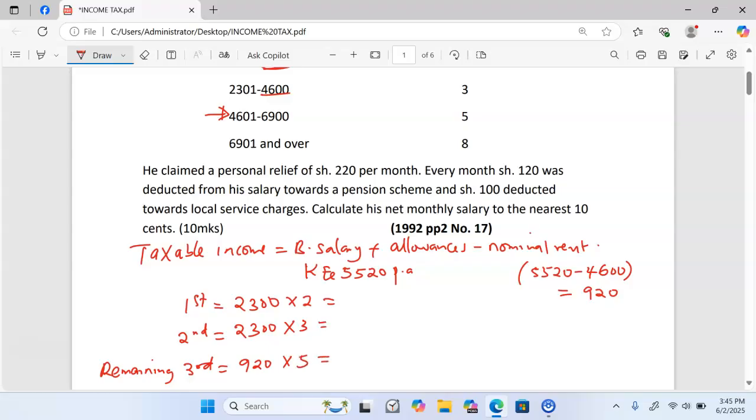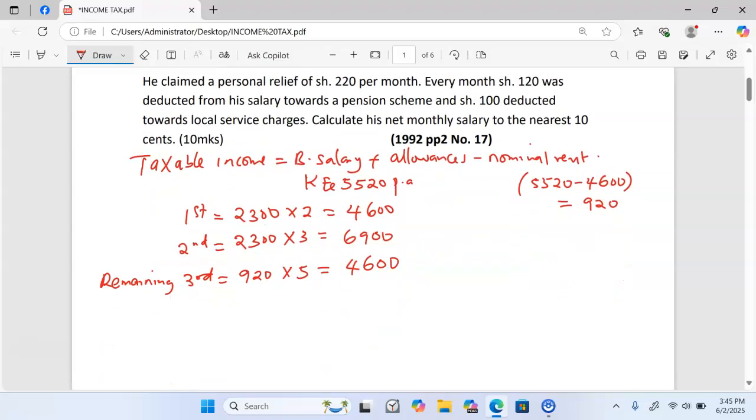When you multiply, you get the taxes. 2,300 times 2 equals 4,600. 2,300 times 3 equals 6,900. And 920 times 5 equals 4,600.